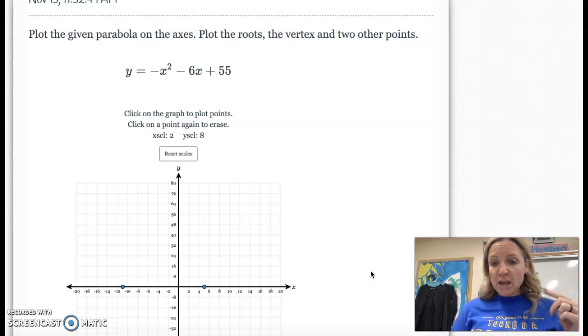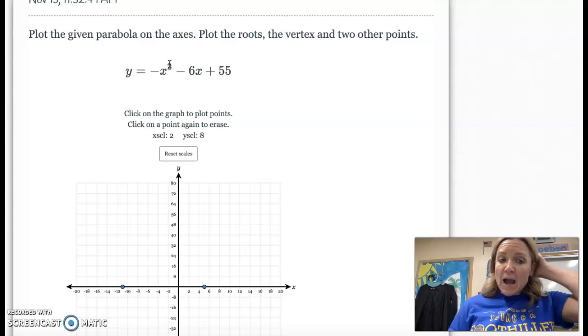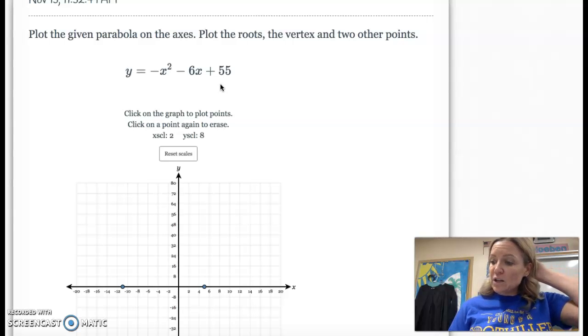Now I need to get my vertex. So I found the number that was halfway between these, which is negative three. So if you take negative three and plug it in here and here, you're going to get negative three squared, which is nine. Take the opposite and then negative six times negative three would be positive 18 plus 55. Punch it in your calculator and you should get 64.